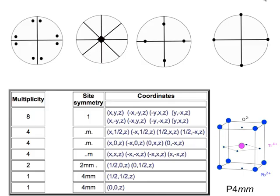In the last lecture, we looked at lead titanate. By looking at the structure, which doesn't have any screw axes or glide planes, we were able to show that depending on where you locate a particular atom, the multiplicity is determined. For example, at the general position x y z, the symmetry of lead titanate gives us 8 such atoms, but if I place it directly on this tetrad, then I would have just one atom in the cell.